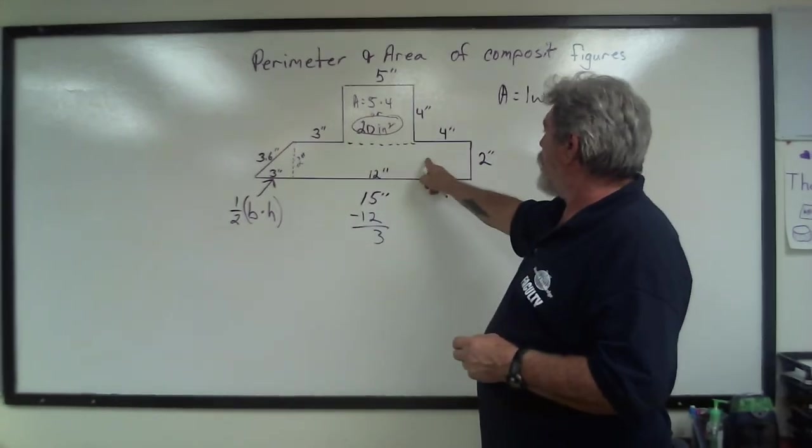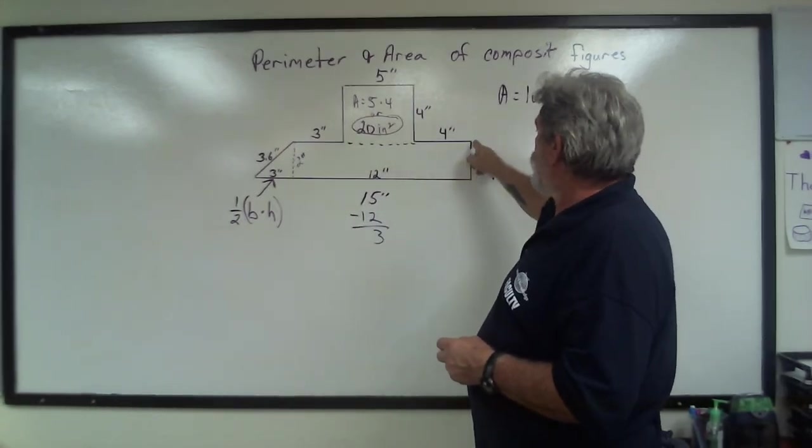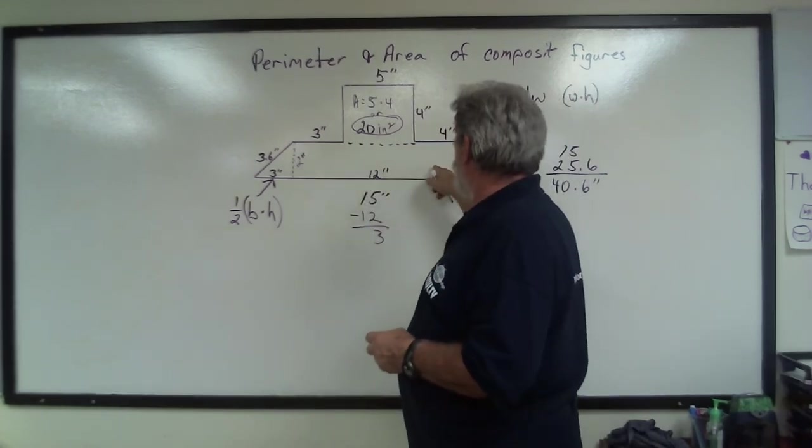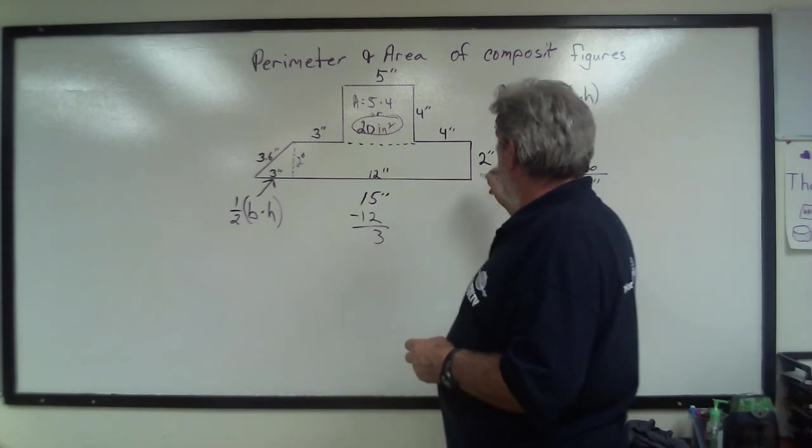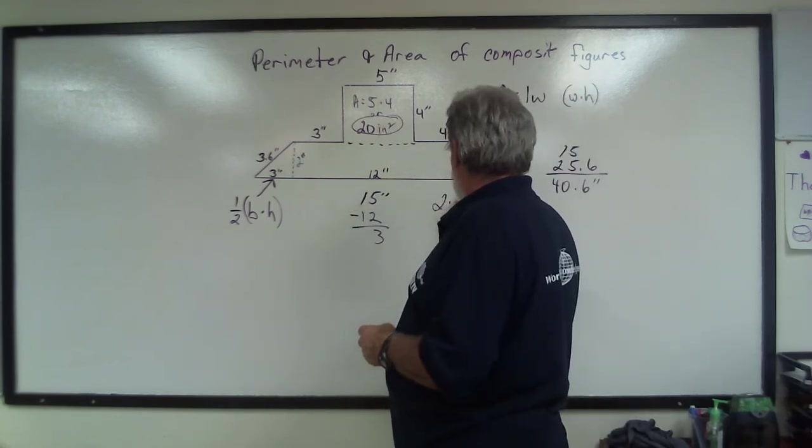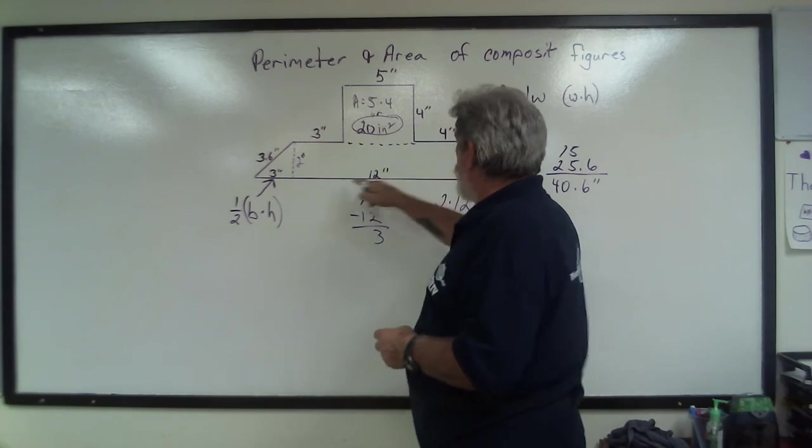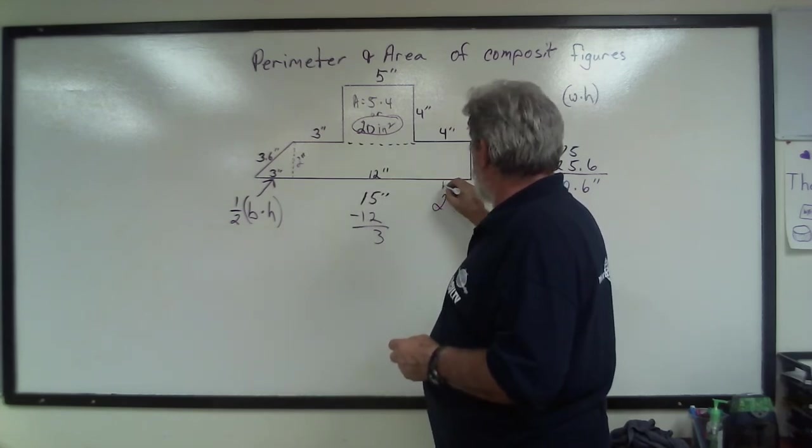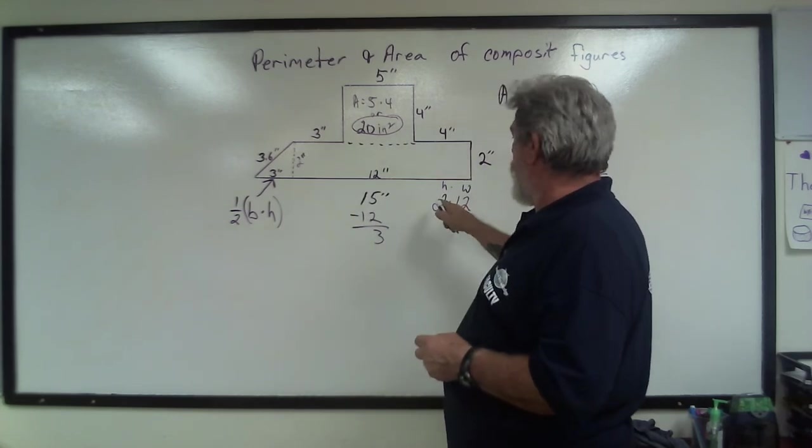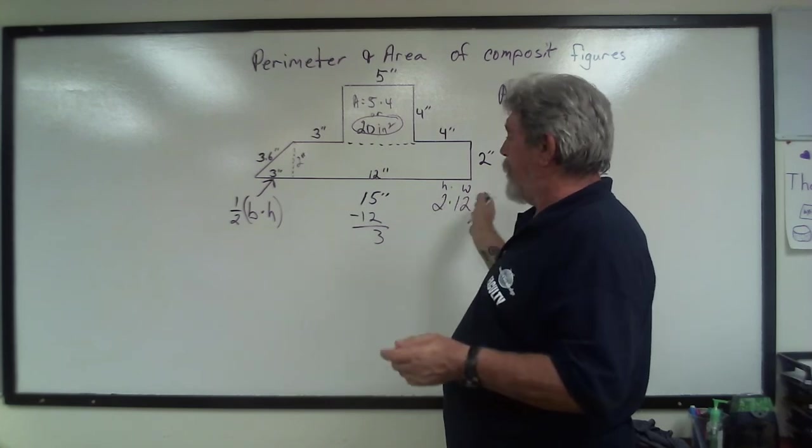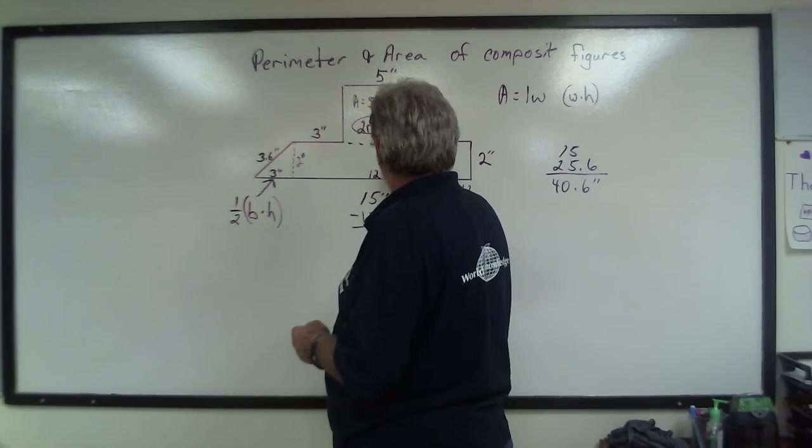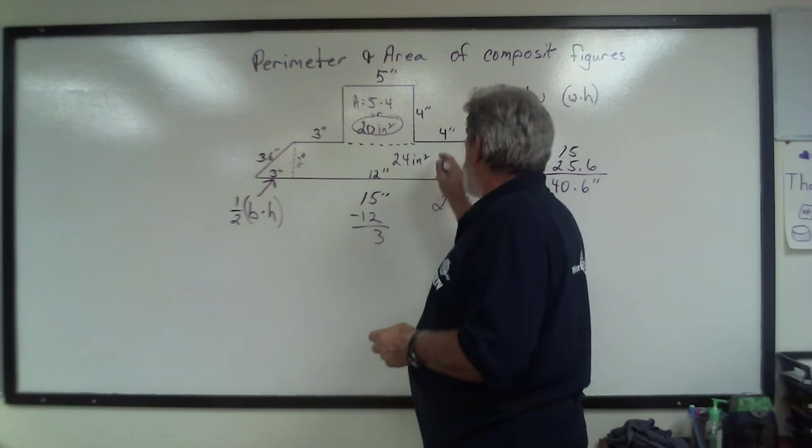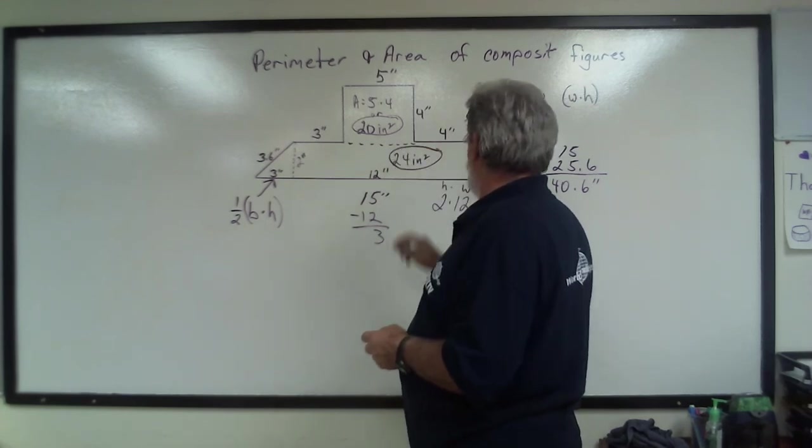Well, let's look at this section now. We know it's 2 inches high, and we know it's 12 inches across. So 2 times 12, width, height. It doesn't matter which order you do it in. And we end up with 24 inches squared. That's our area for that one.